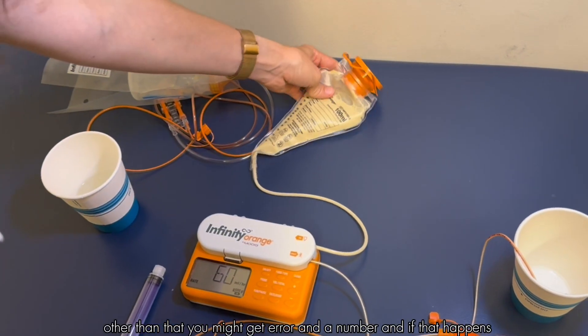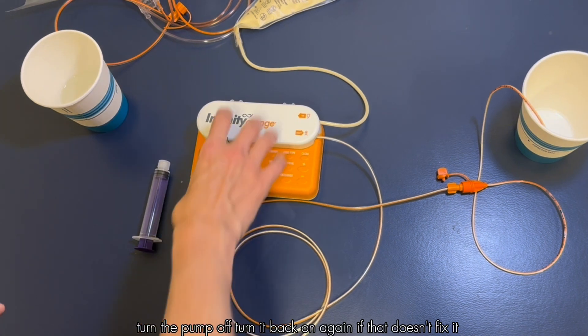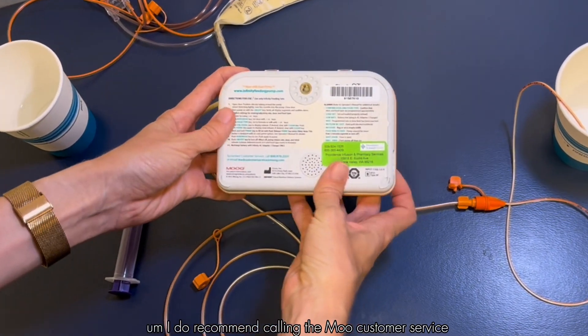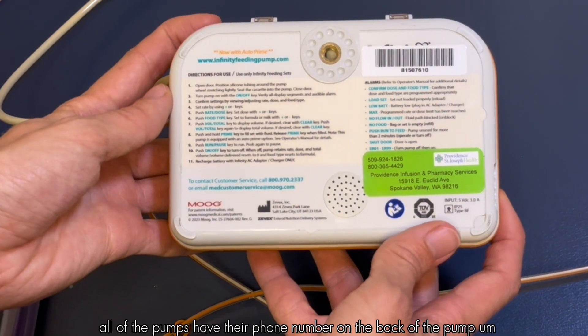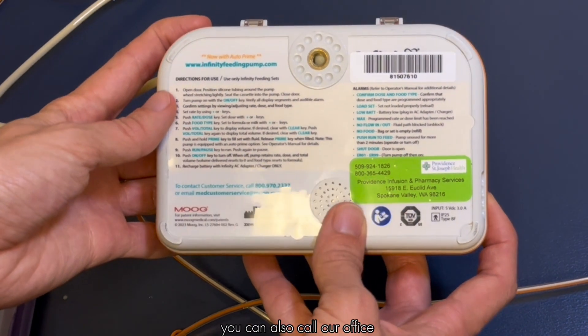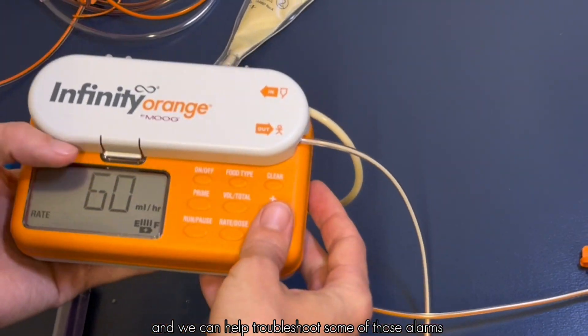Other than that you might get error on a number and if that happens turn the pump off, turn it back on again. If that doesn't fix it I do recommend calling the Moog customer service. All of the pumps have their phone number on the back of the pump. You can also call our office, we're open Monday through Friday from 8 to 5 and we can help troubleshoot some of those alarms.